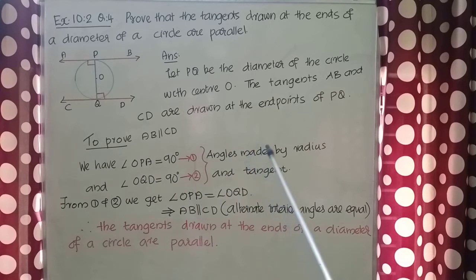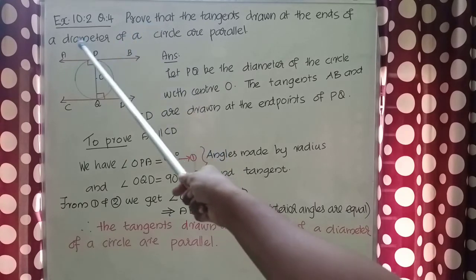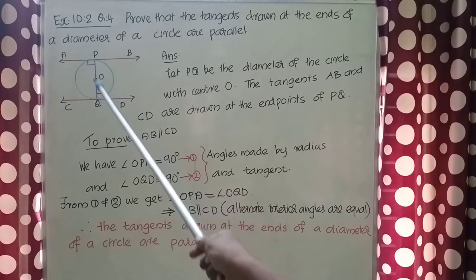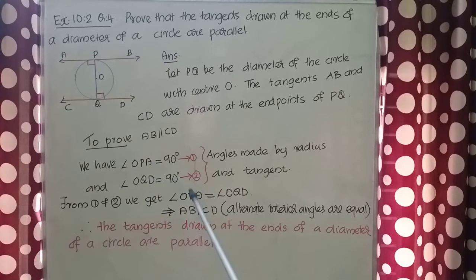Reason: angles made by radius and tangents. So from equations 1 and 2 we get angle OPA equal to angle OQD. Now you see this angle OPA and angle OQD are alternate interior angles. And we proved here they are equal. So we can conclude AB parallel to CD because alternate interior angles are equal.